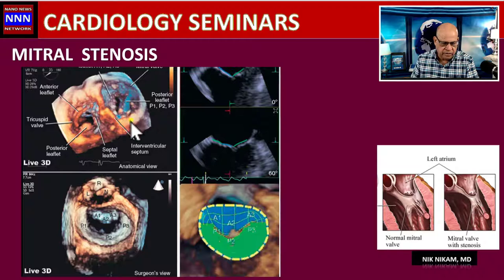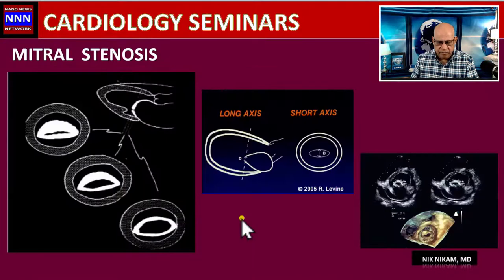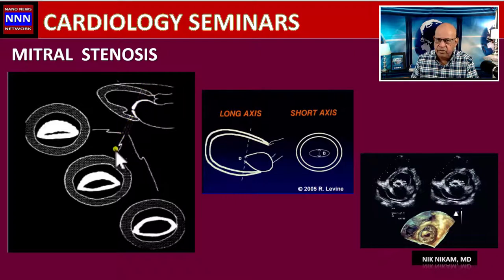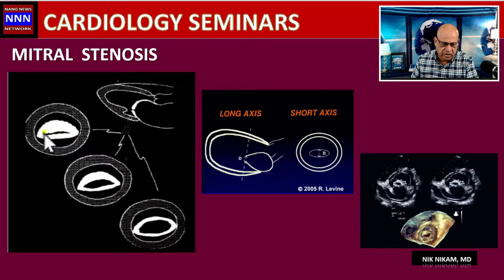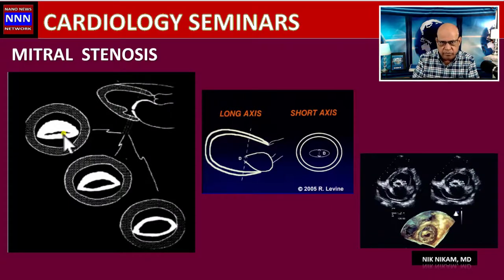Here are leaflets depicted by transesophageal echocardiography, showing the mitral orifice. When measuring the mitral valve orifice using planimetry, we need to pay attention to where the beam is cutting through the heart. If it cuts above, there may be a wide opening; in the mid-region it may be intermediate; but at the tip where the leaflets are barely opening, you see a slit-like opening — that is the critical stenosis area, through which all the blood must pass.